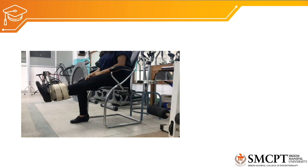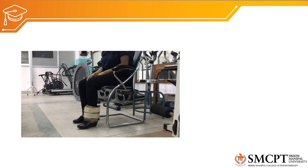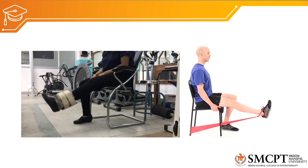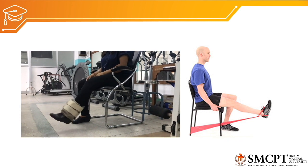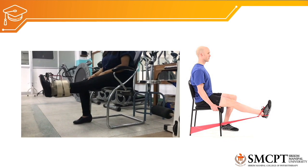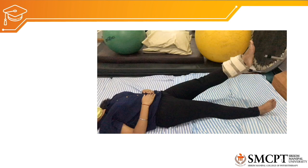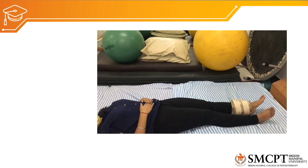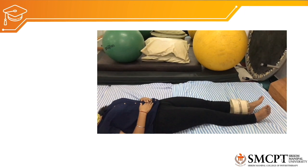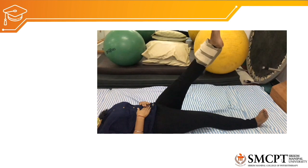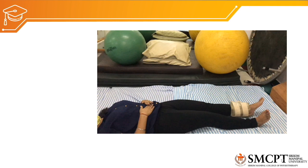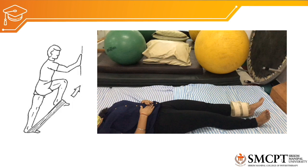For progressive resistance exercises, weight cuffs, manual resistance by the therapist, or theraband can be used. The patient sits and a weight cuff is placed on the distal lower limb to perform knee extension for quadriceps strengthening. To strengthen the hip flexors, the patient lies supine and flexes the hip against resistance using a weight cuff for 10 repetitions over 3 sets with rest intervals. Alternatively, a theraband tied to the distal limb and anchored under the other limb is used for hip flexion resistance.